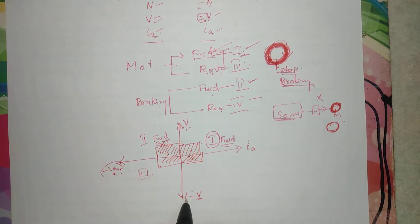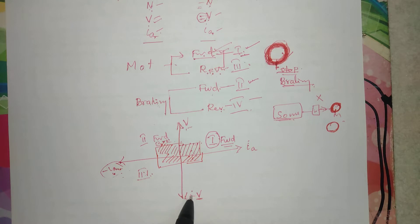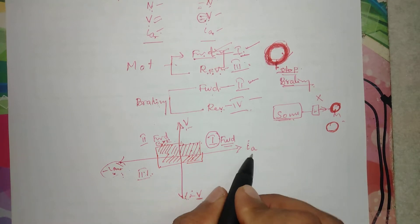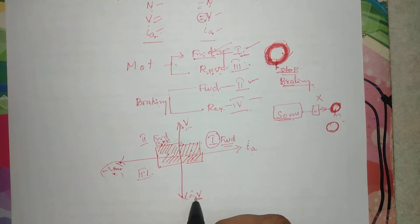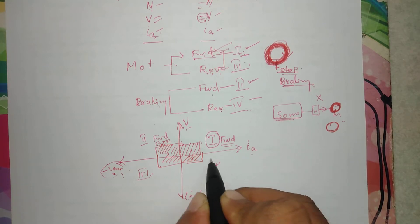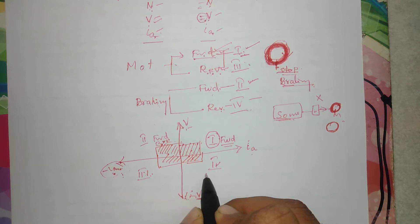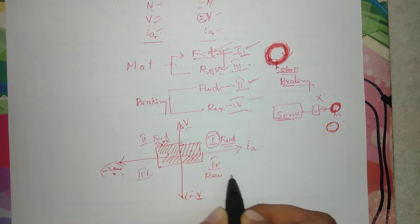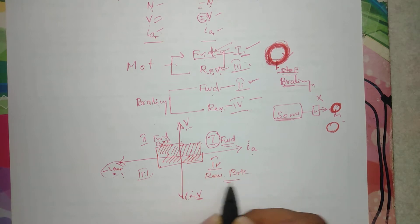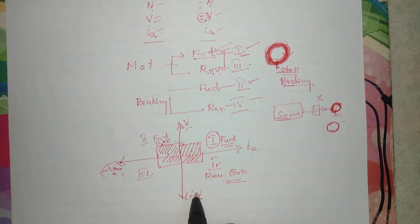All four quadrants are essential to identify for converter design. The converter design is mainly possible by attaining these four quadrant operations, as shown in the circuit diagram for the four quadrant operation DC motor drive.